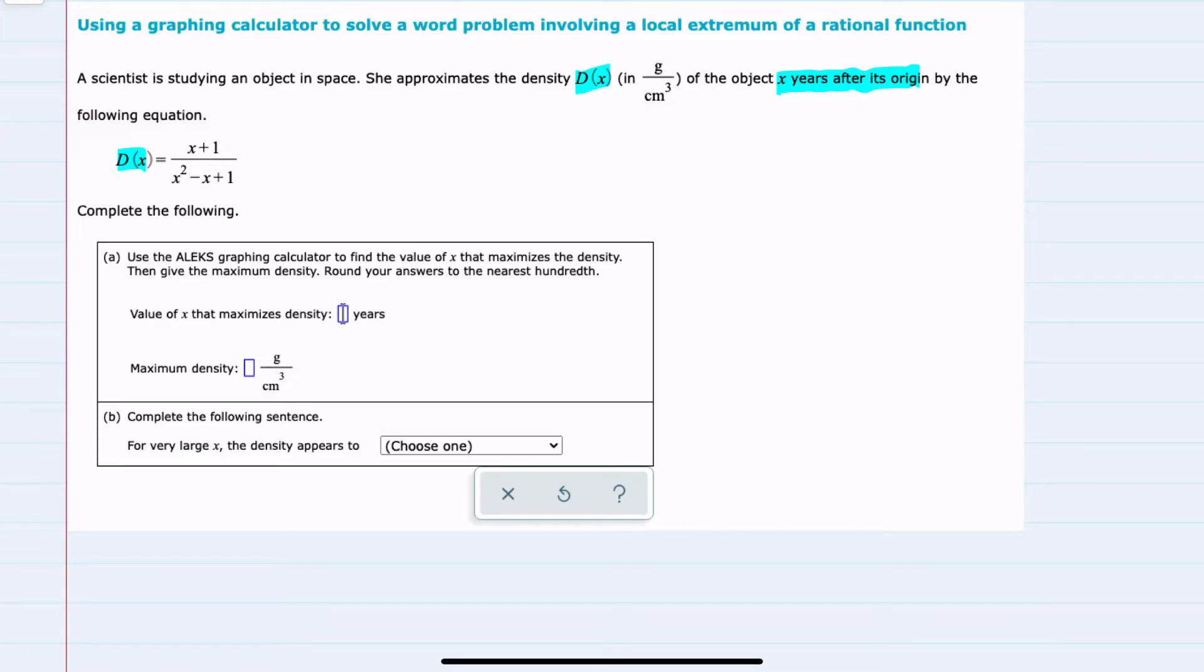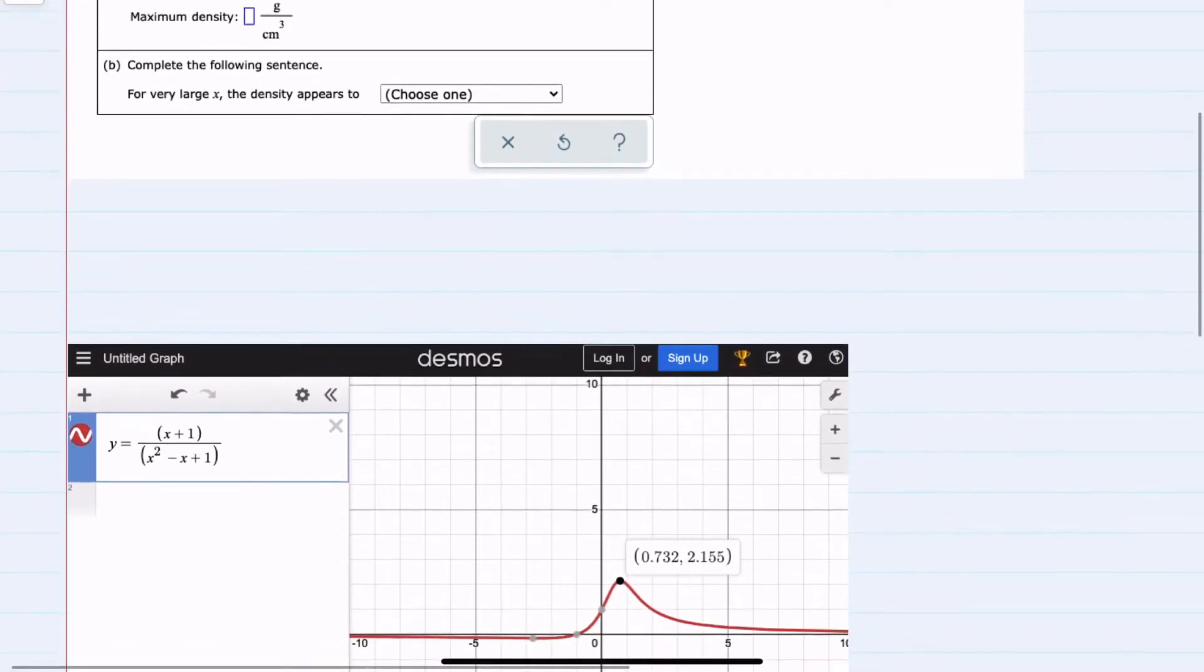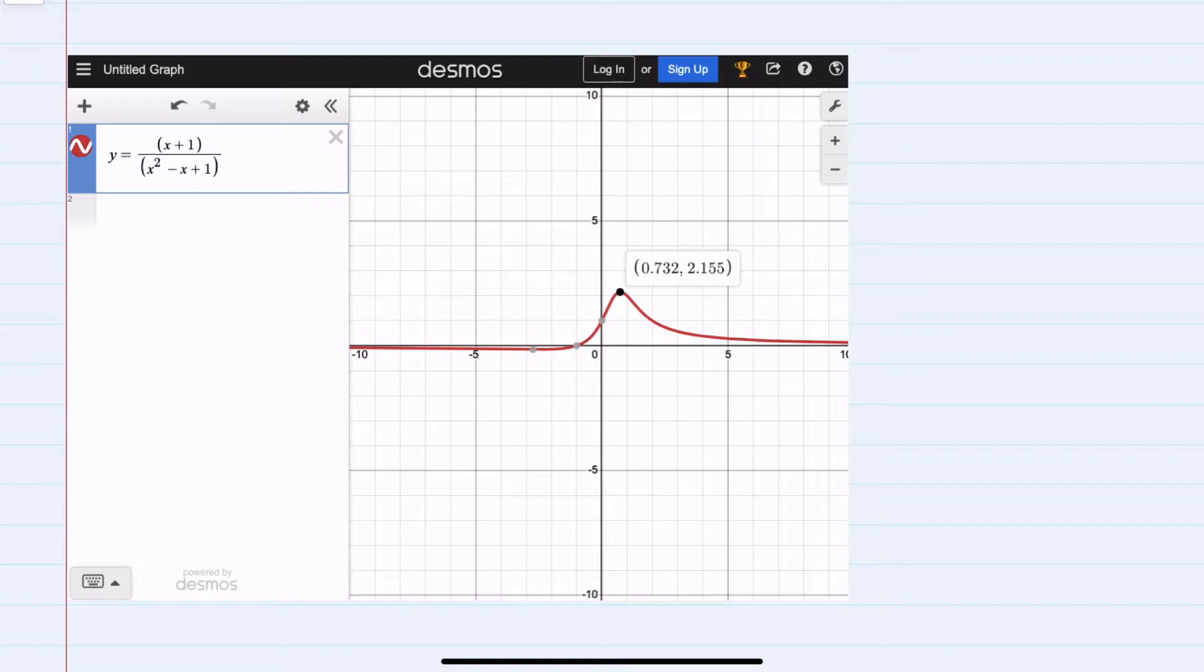For this example, I plugged our function here, d of x, which is x plus 1 over x squared minus x plus 1, into Desmos. And we can see the maximum value has been identified here at 0.732 as the x value, so years. And then that maximum density is 2.155.